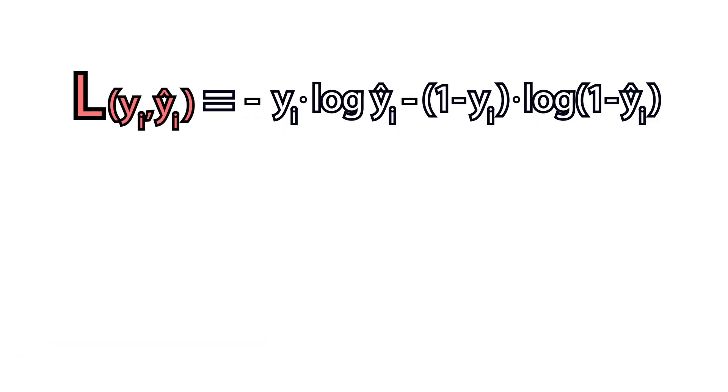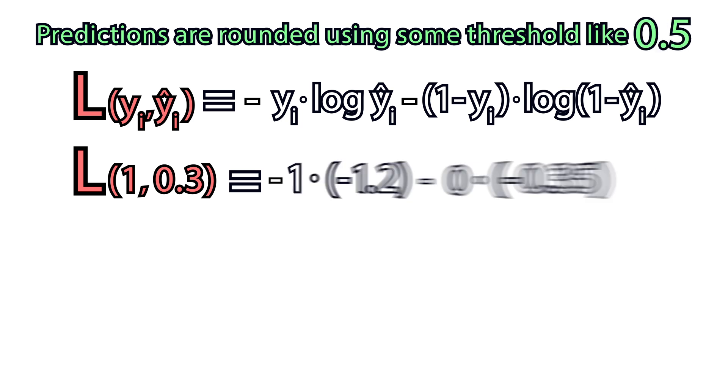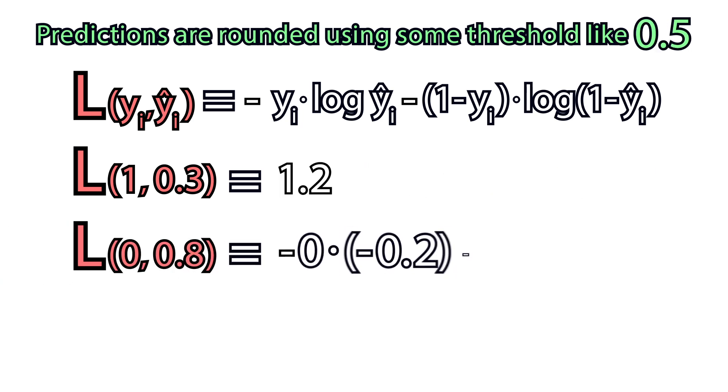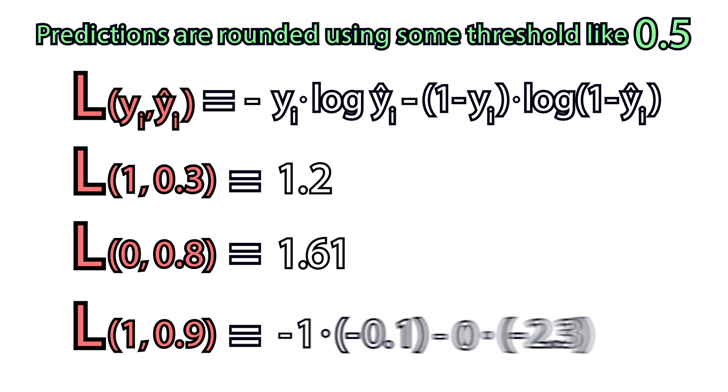Let's see how it works. Say we had to predict 1, we predicted 0.3. Or we had to predict 0, we predicted 0.8. If we predicted it right, we can see how small the loss becomes.